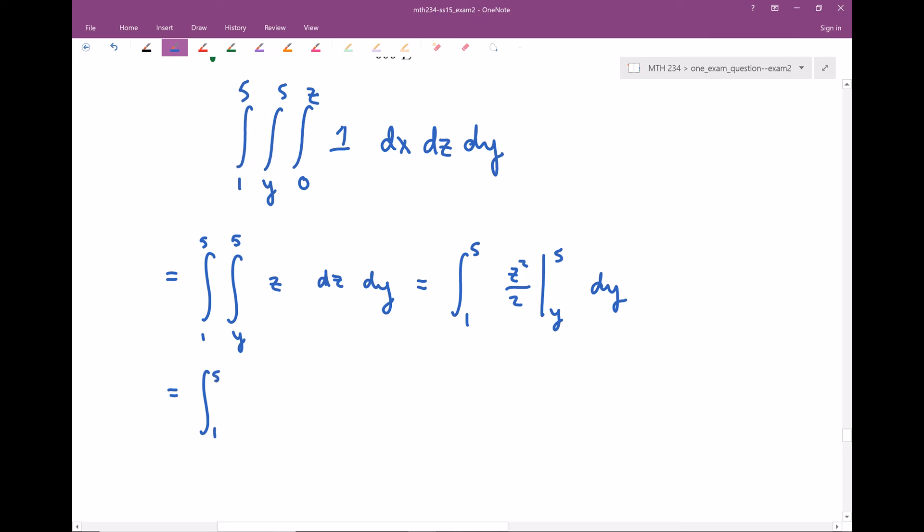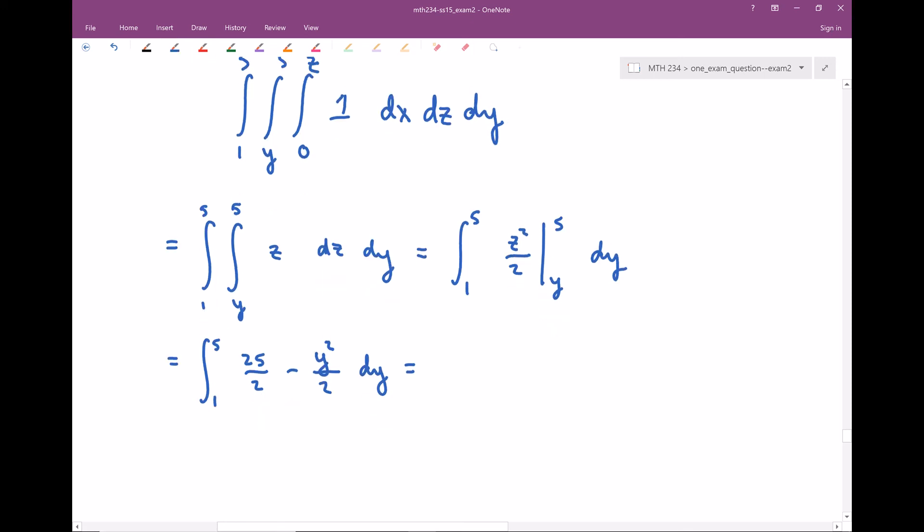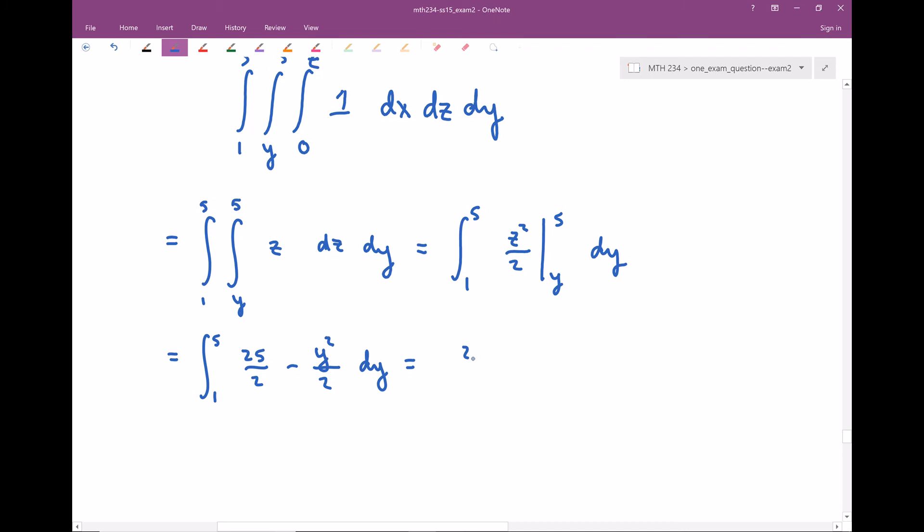When I plug in five, I'm gonna have 25 halves. Subtract away when I plug in Y - I'm gonna have Y squared over two. Now let's integrate with respect to Y. I'm gonna have 25 halves Y minus Y cubed, and we need to divide by three here. So this is two times three, that's six. And I need to evaluate from one to five in this case.